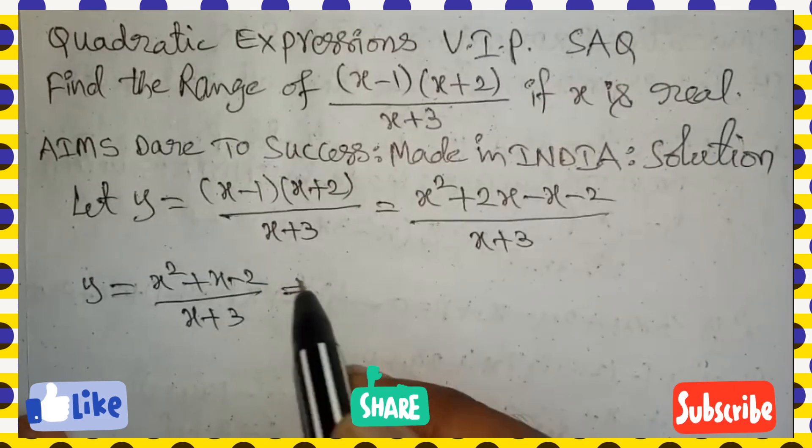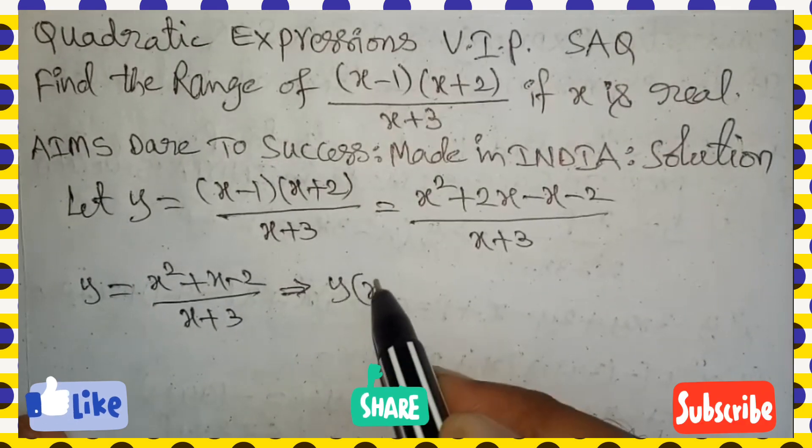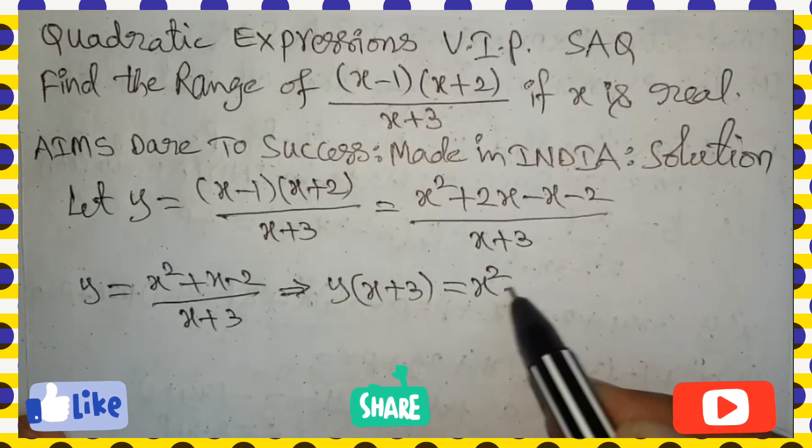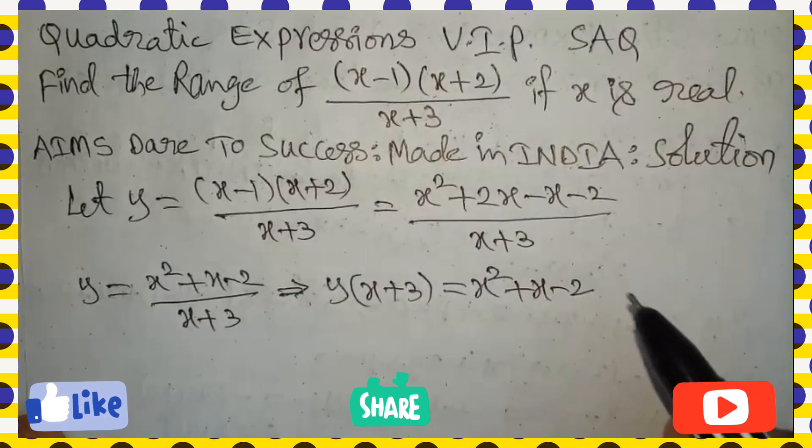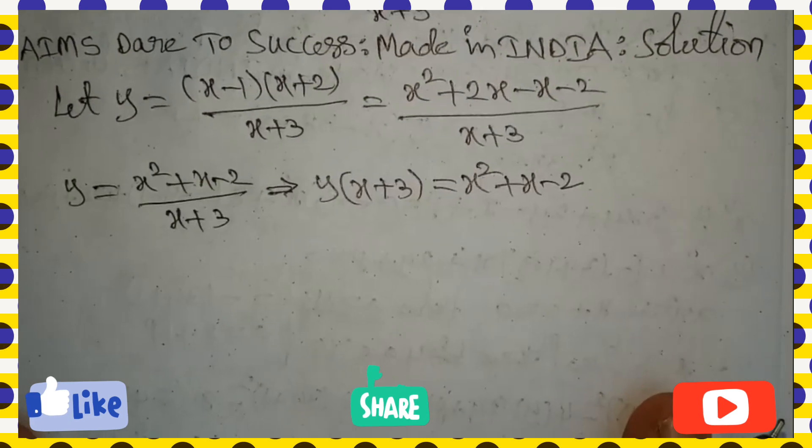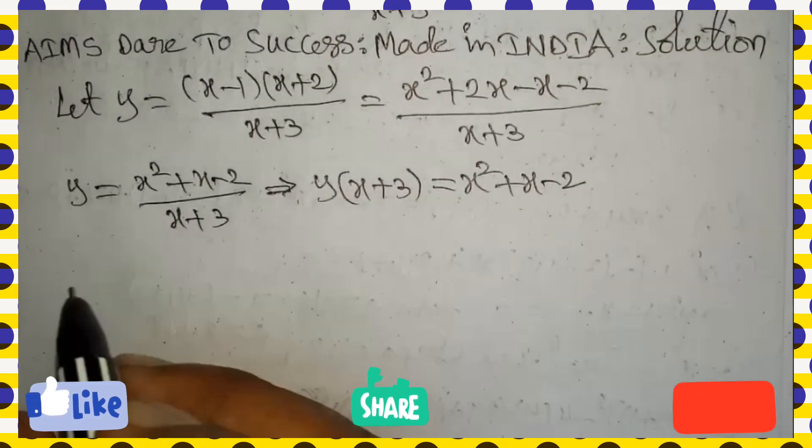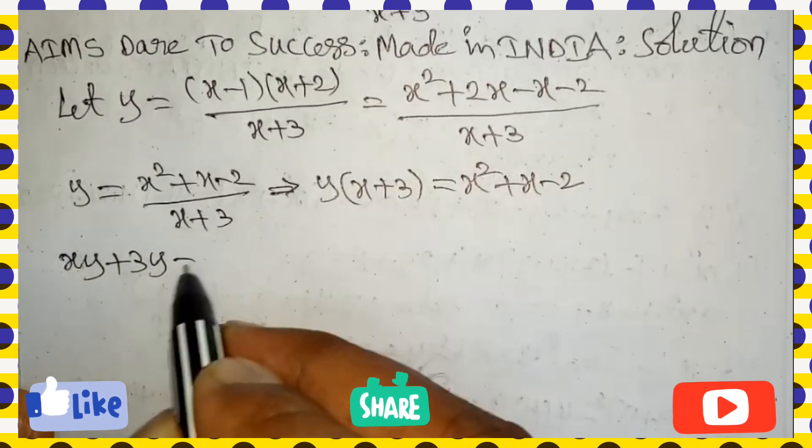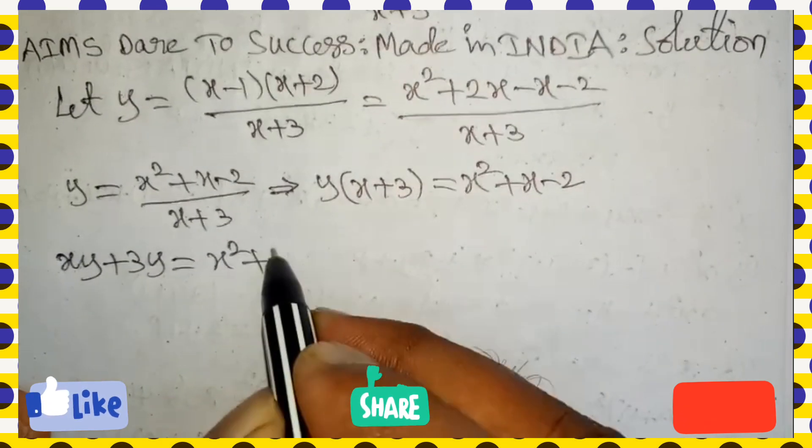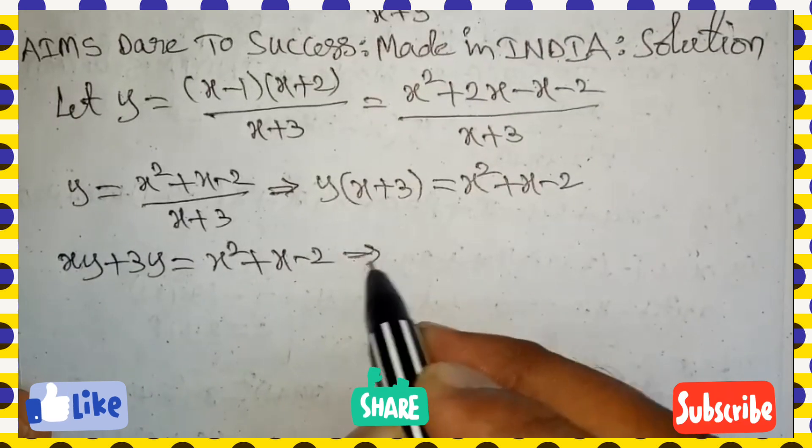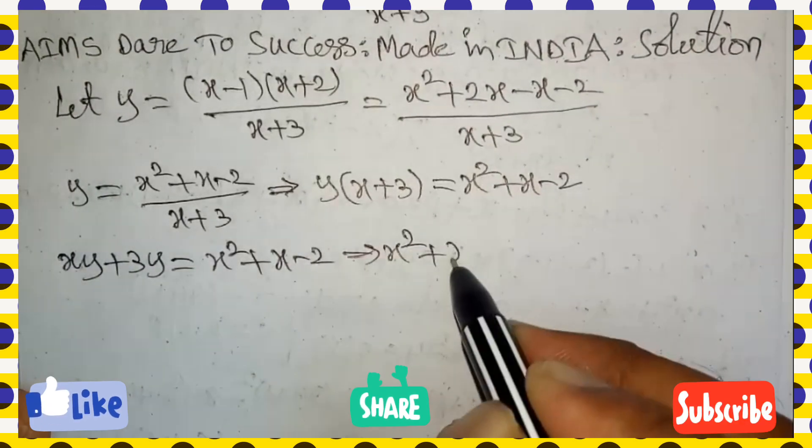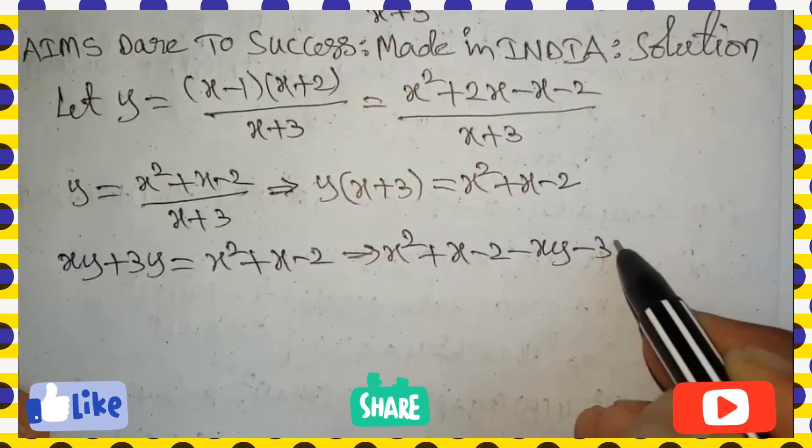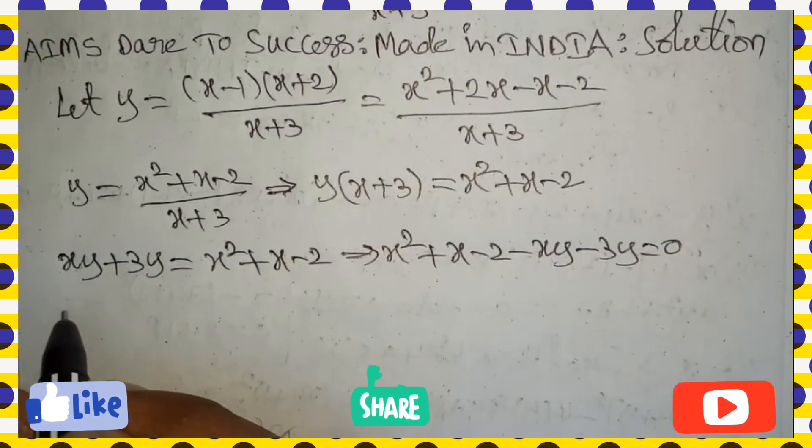Take cross multiplication. We get y(x+3) equals x square plus x minus 2. Multiply y inside: y into x is xy, plus y into 3 is 3y, equals x square plus x minus 2. X square coefficient is positive. So x square plus x minus 2, all left side values coming to right side, we get minus xy minus 3y equals 0.